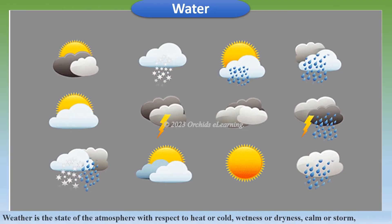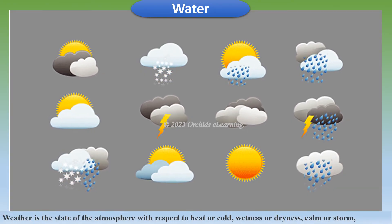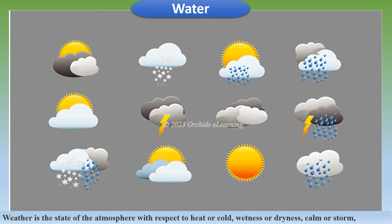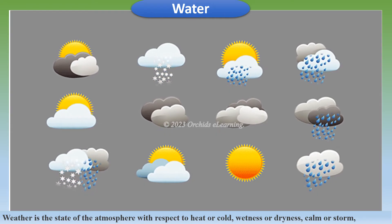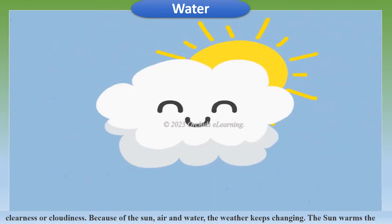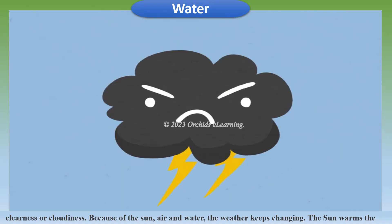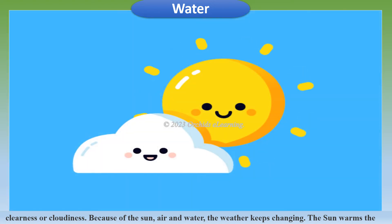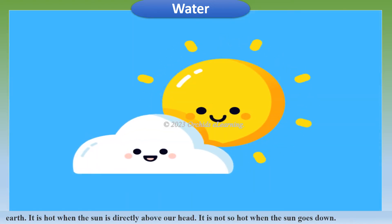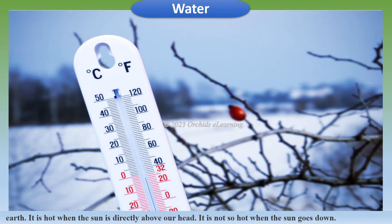Weather is the state of the atmosphere with respect to heat or cold, wetness or dryness, calm or storm, clearness or cloudiness. Because of the sun, air, and water, the weather keeps changing. The sun warms the earth — it is hot when the sun is directly above our heads, and not so hot when the sun goes down.